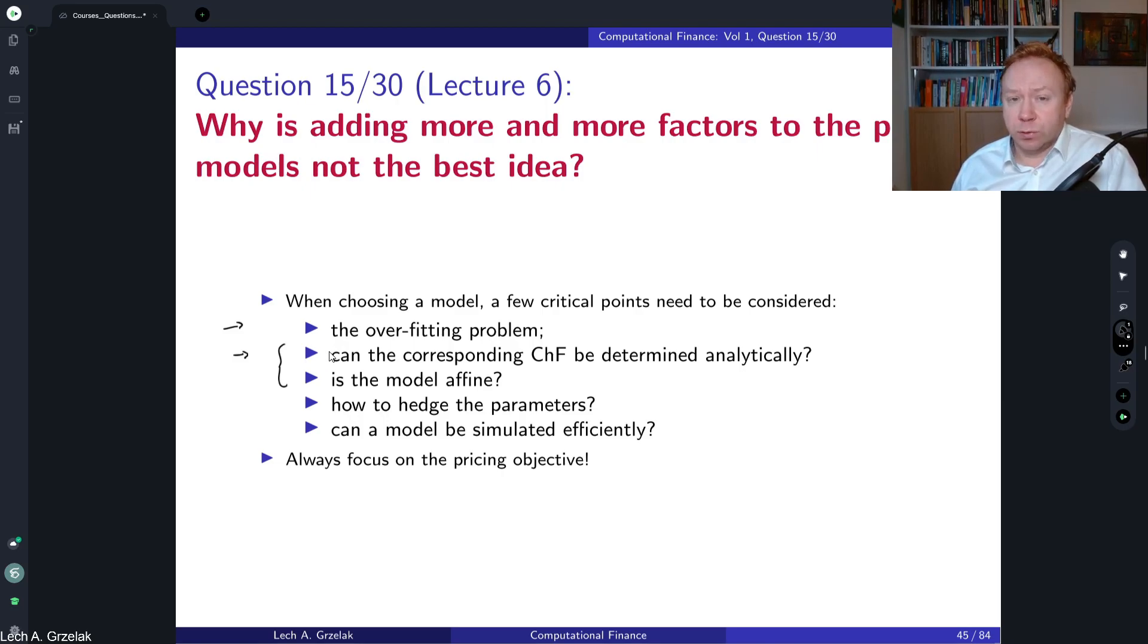We have already learned in this course that the affinity conditions are very strict, especially the covariance matrix. So if we make higher dimensions of our model, likely we will not meet the criteria of affinity. So if we make your parameters stochastic, very likely you will encounter a problem that your model is not affine, and this means that you will not be able to find the characteristic function.